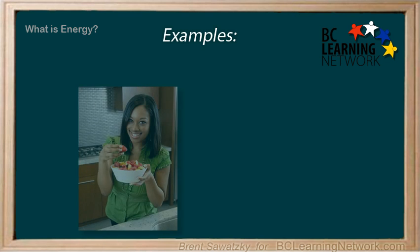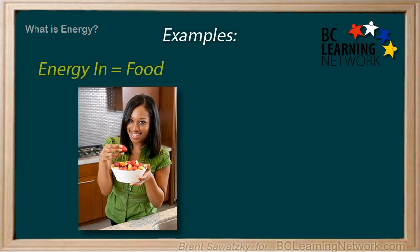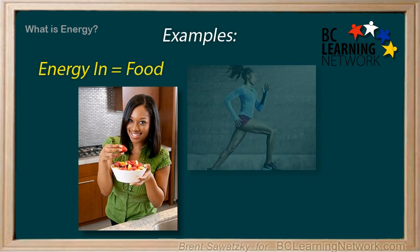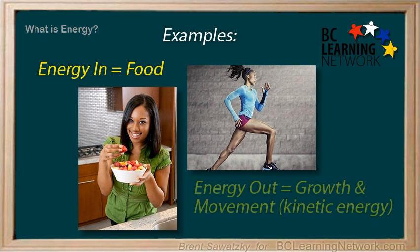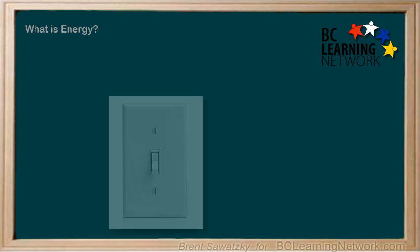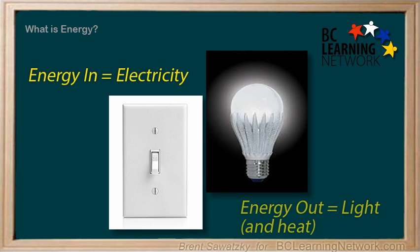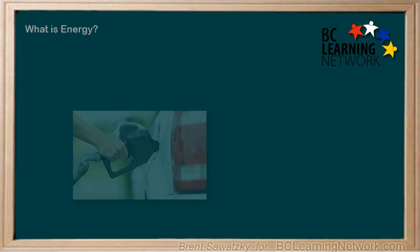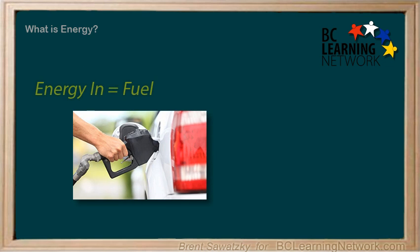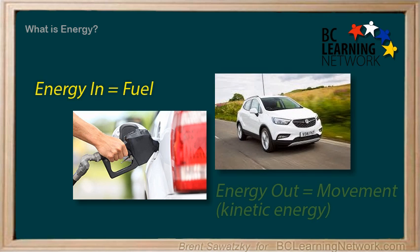Your body, and all living things, convert energy. Your body takes the chemical energy from the food you eat, and allows your body to grow and to move. We call the energy of movement kinetic energy. Light bulbs are also energy converters — they convert electrical energy to light energy. Cars also convert energy: they convert chemical energy, stored in gasoline, into kinetic energy as they move.